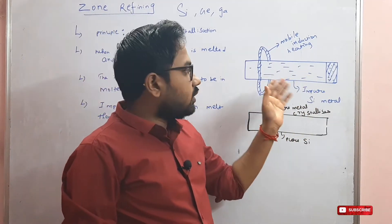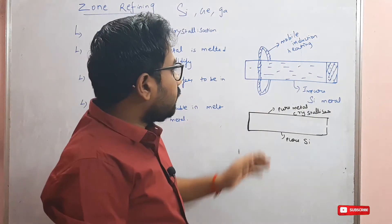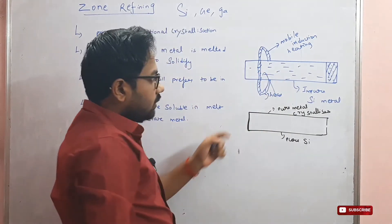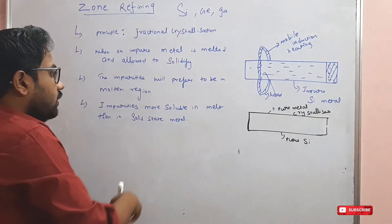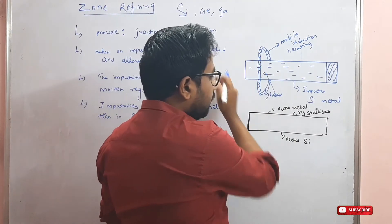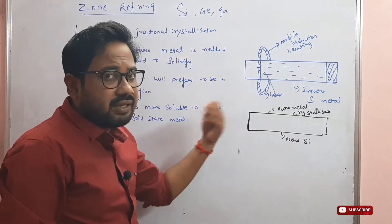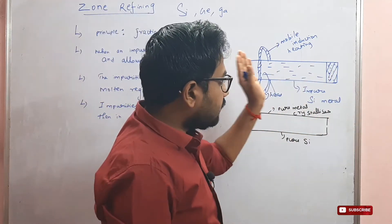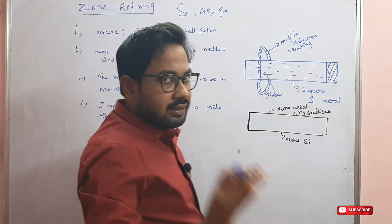As the induction heating moves, the impurities melt. The heat is applied in high amount to form a molten region. The molten region is narrow. The impurities will go to the other end — the adjacent side. The impurities move toward the end of the bar as the molten zone travels.